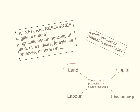Land basically refers to all the natural resources — all the gifts of nature that are used in the production process. Whether it's agricultural land, non-agricultural land, rivers, lakes, forests, oil reserves — any and all natural resources that are used in the production process.